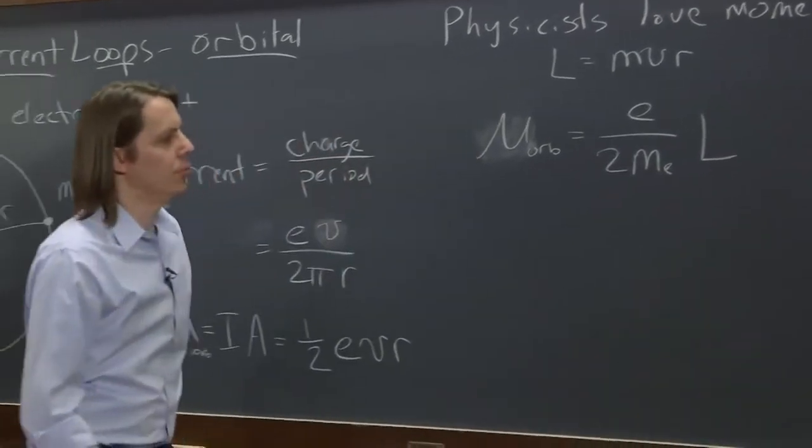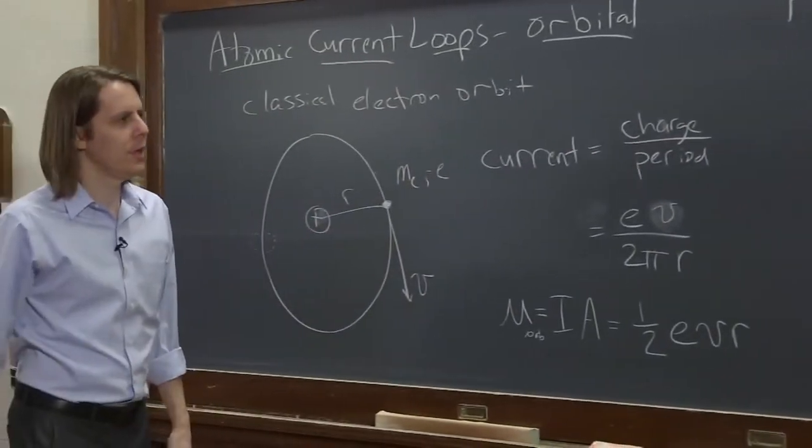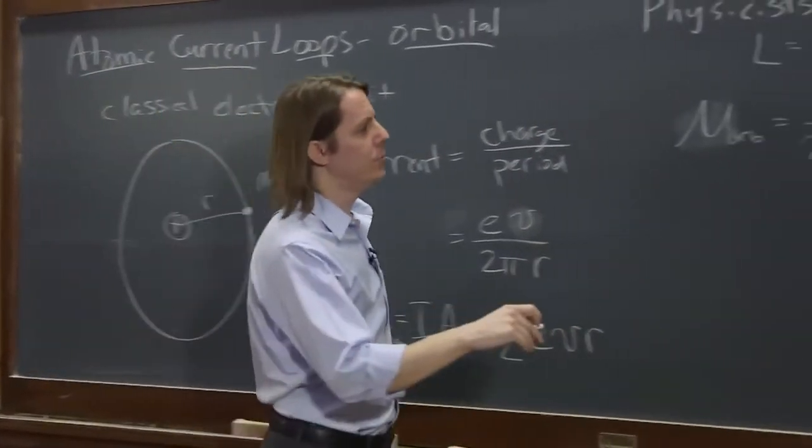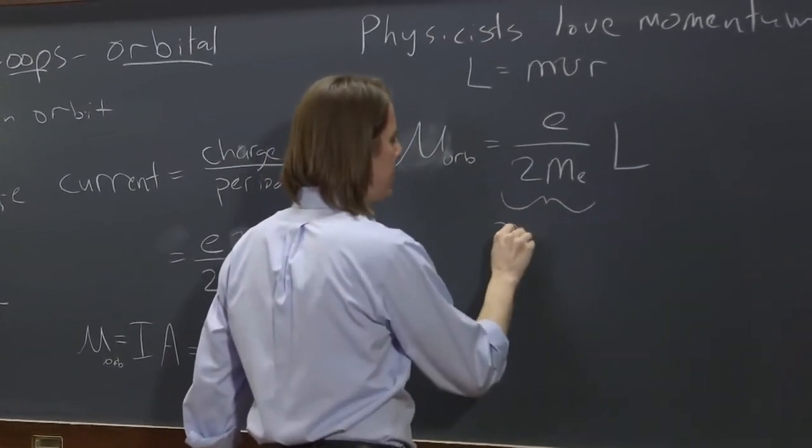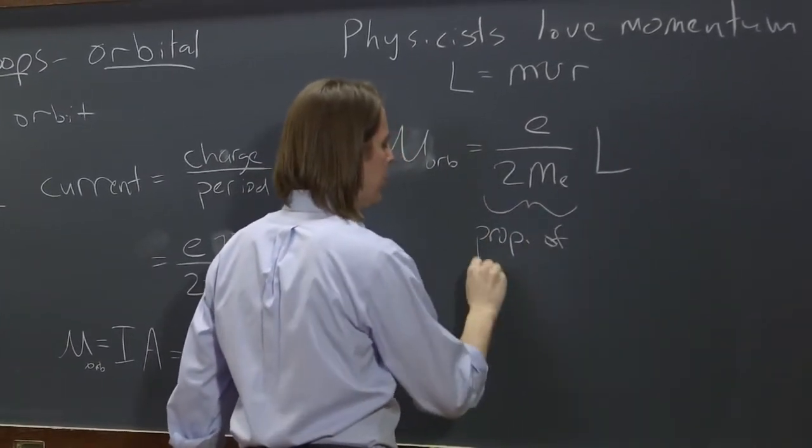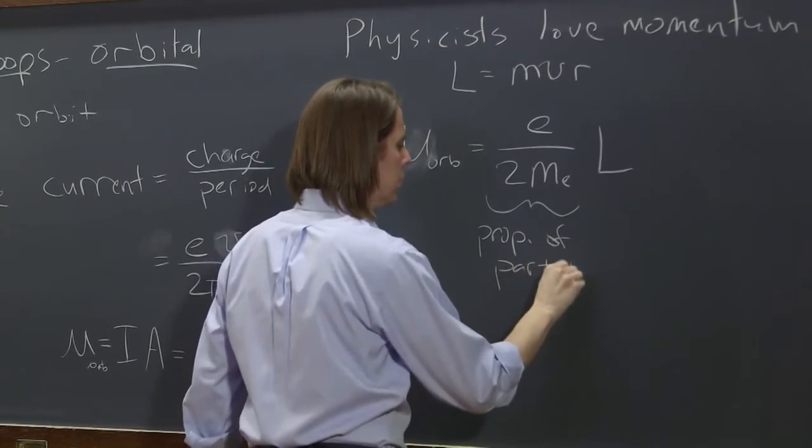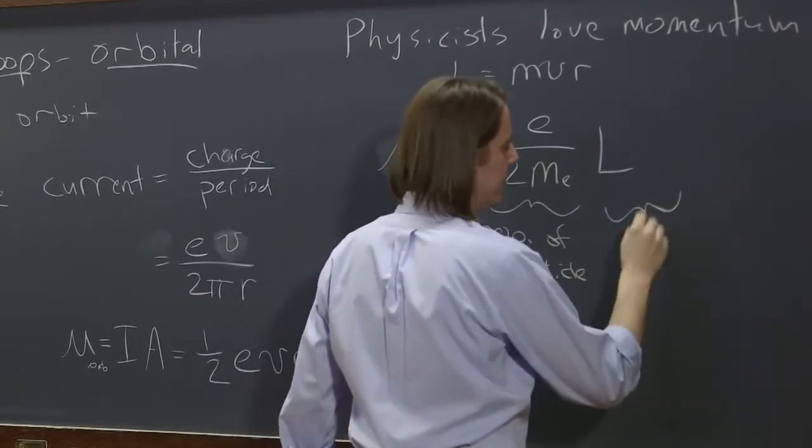times its orbital angular momentum. So we like to write it this way, because then you'll notice that this is the property of the particle, and this is just its angular momentum.